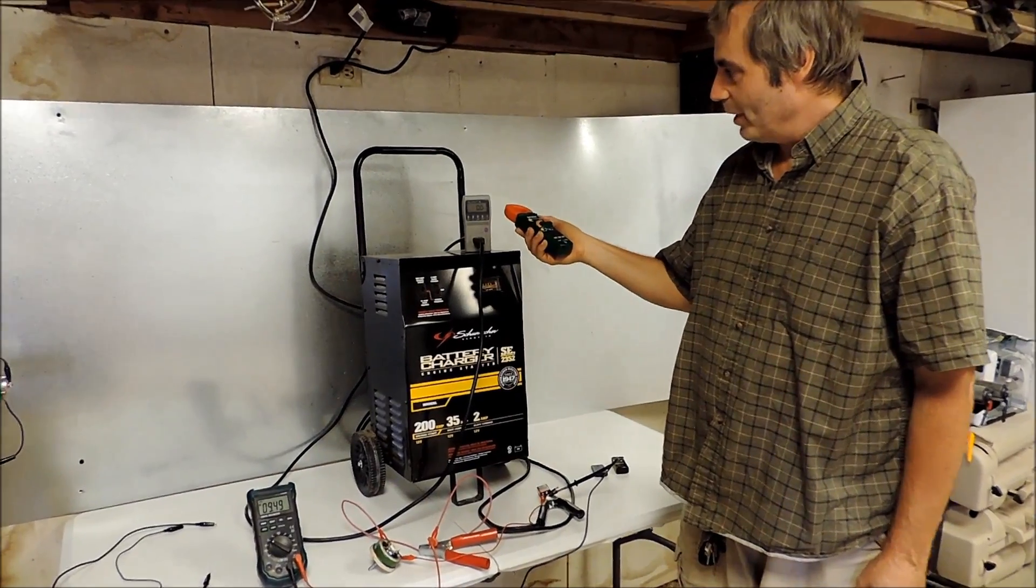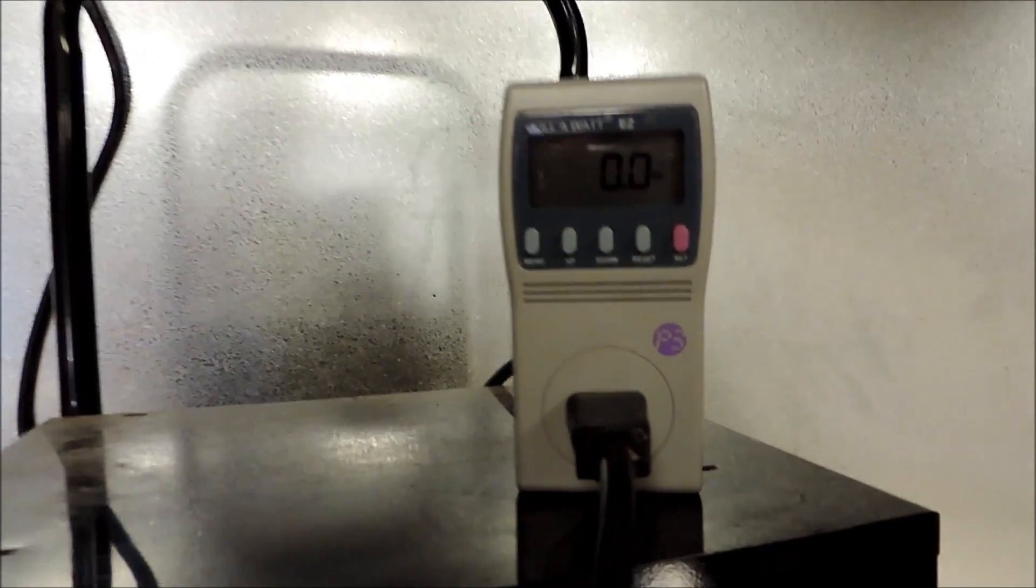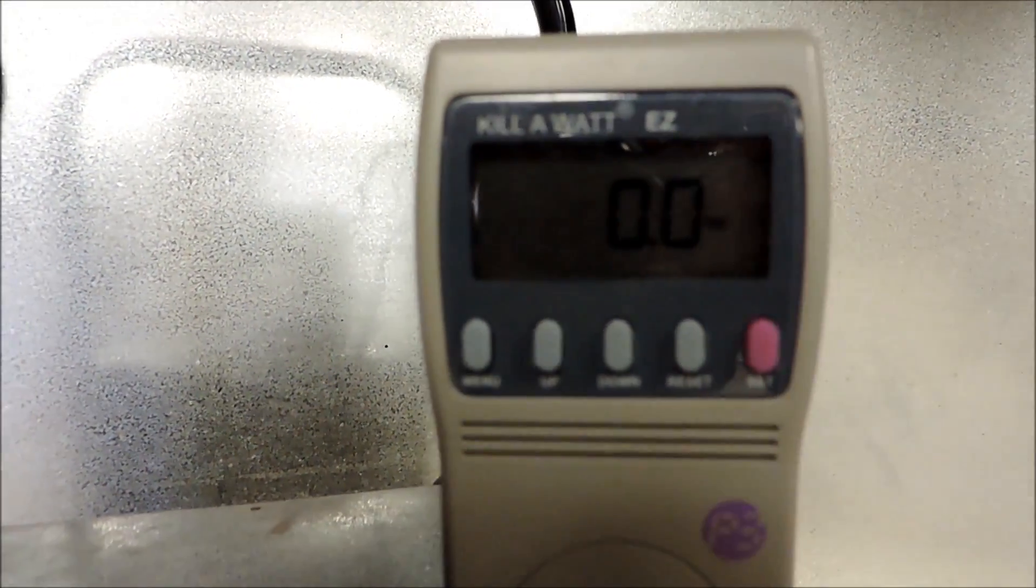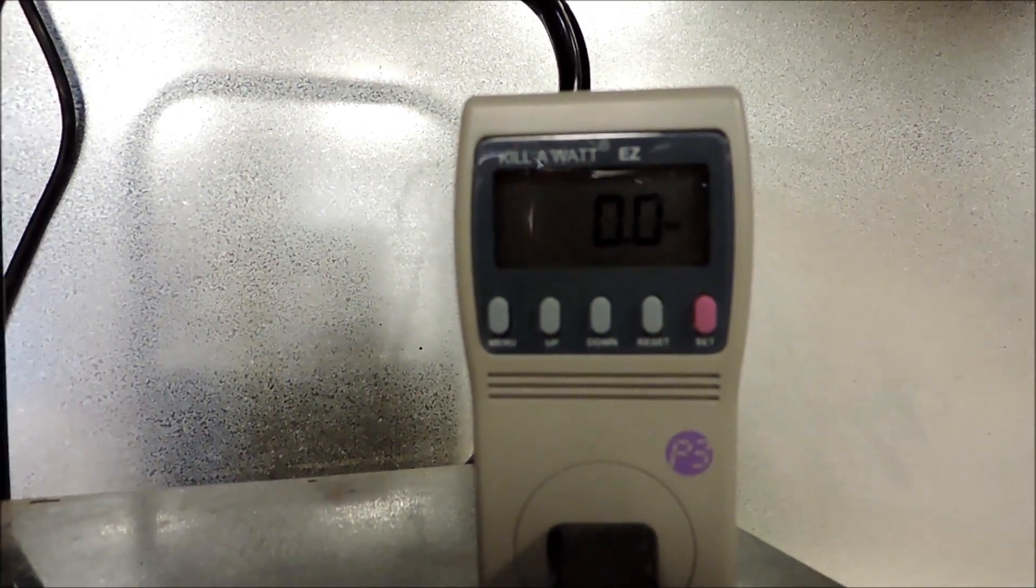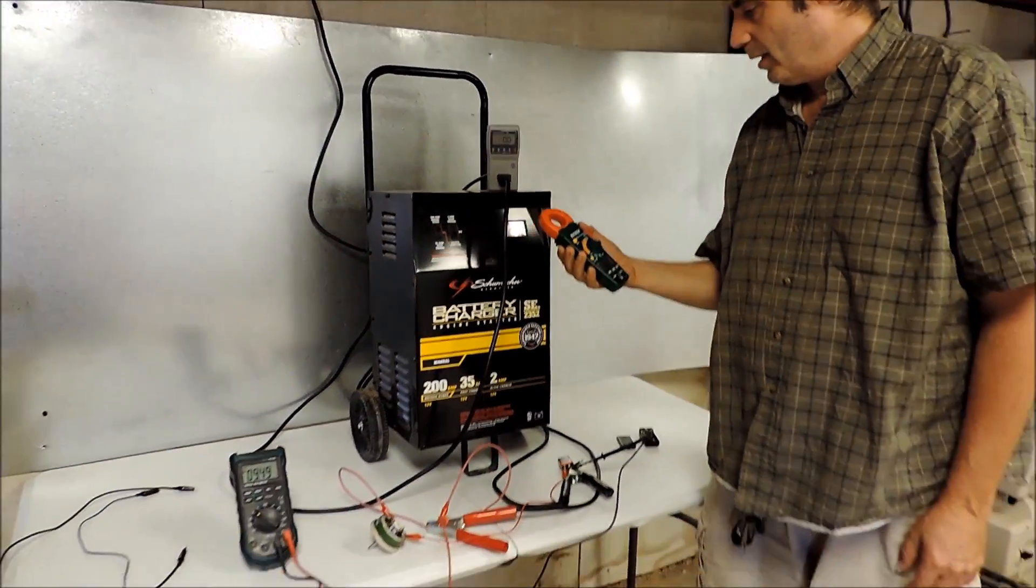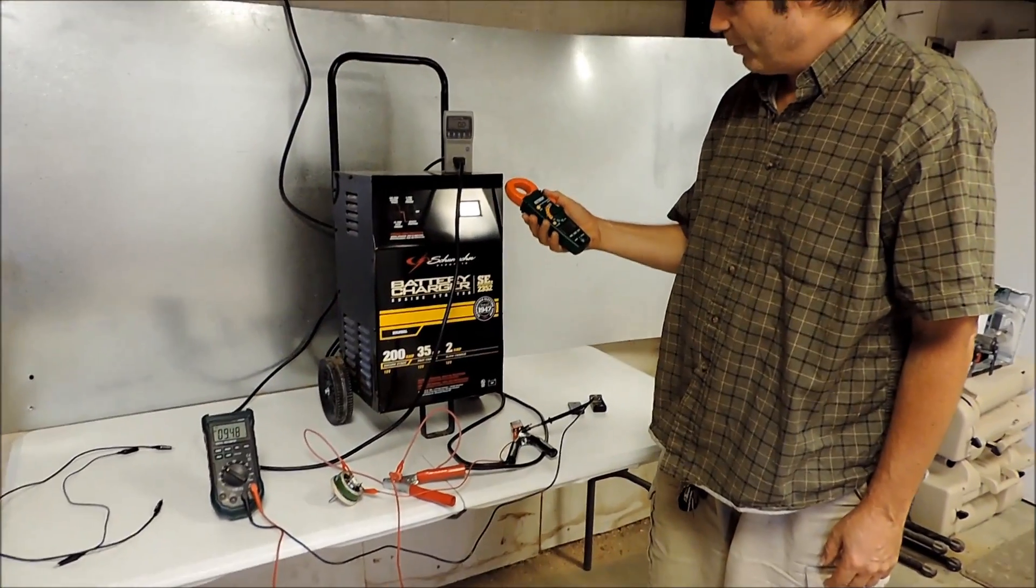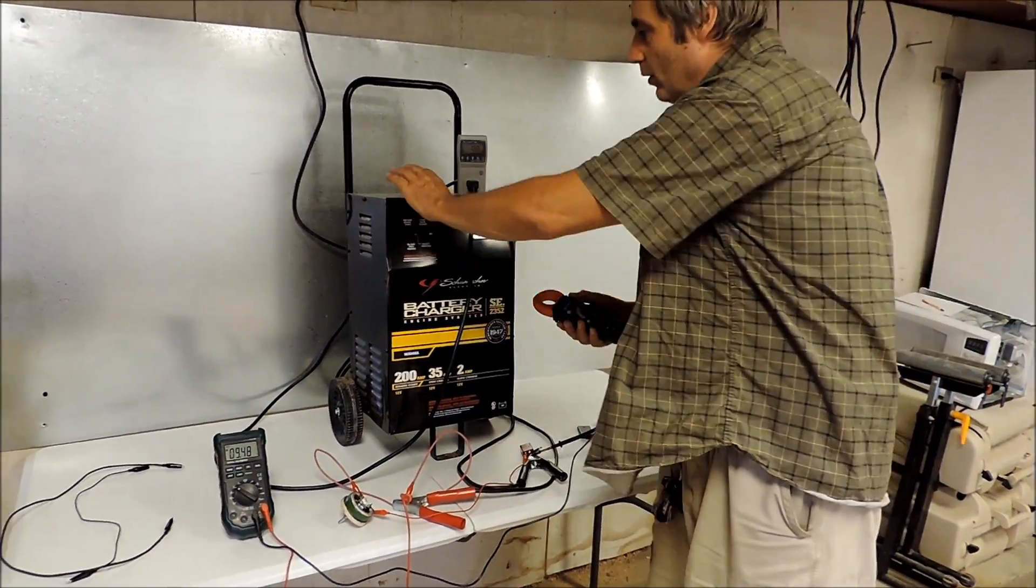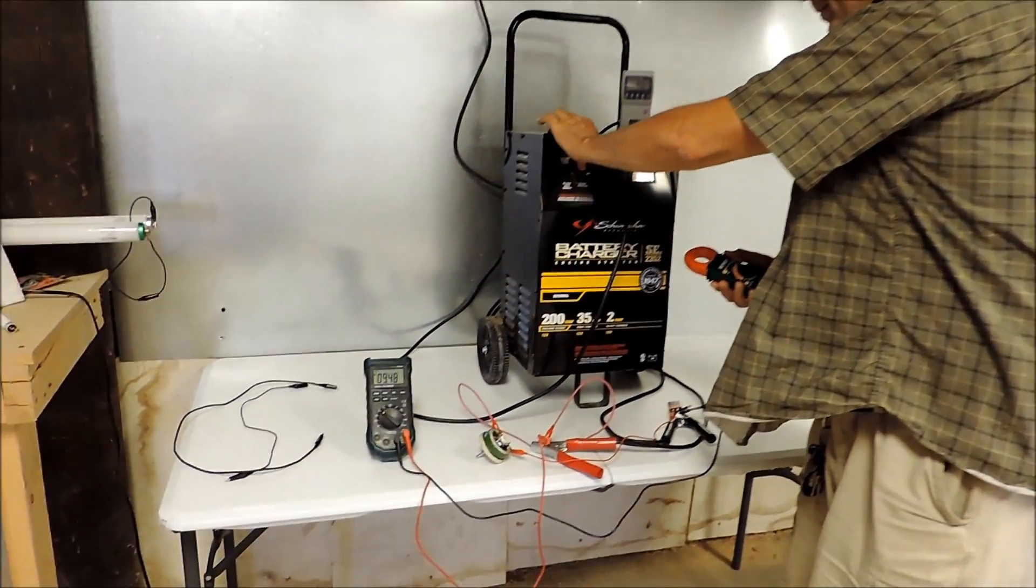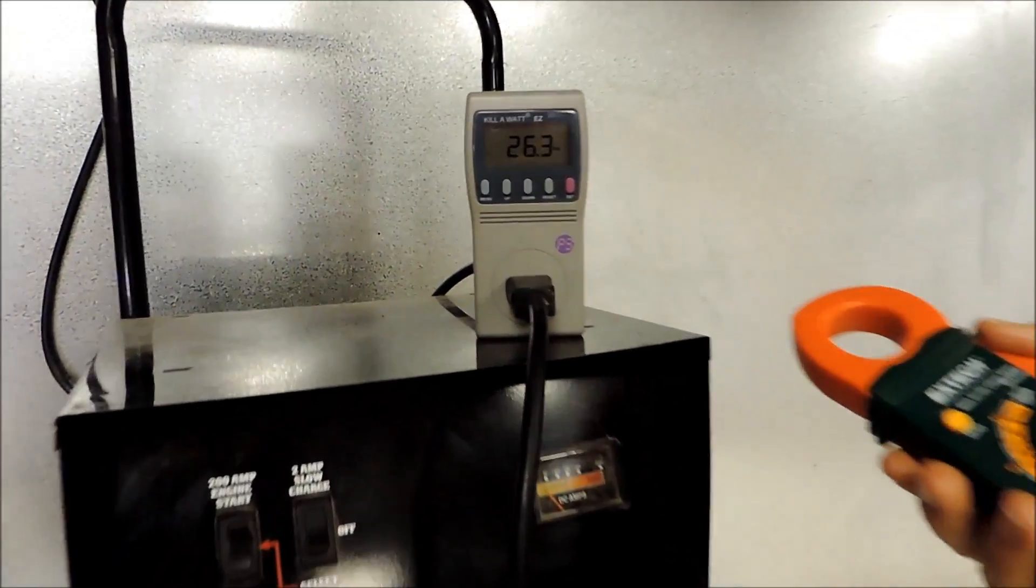Okay, here we have a regular charger with a wattmeter, zero watts going in right now. We haven't turned it on as far as charging goes. It's plugged in, but it isn't turned on for charging. And we've got a little amp meter here that we're going to be reading the amps with, and so we'll turn it on.